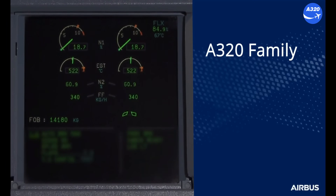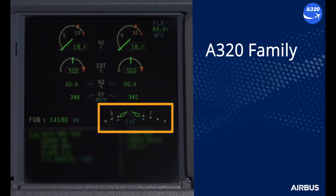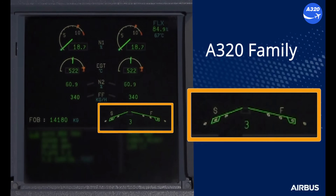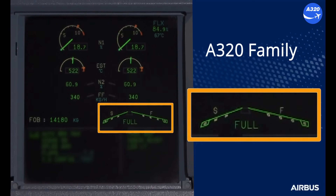On the ECAM upper display, on the single aisle family, the flaps lever position is indicated and the flaps and slats indication is displayed in white. They become amber if there is a slats or flaps fault. For slats, there are four positions that can be displayed, corresponding to the four possible angles of slats extension. For flaps, there are five positions which can be displayed, corresponding to the five possible angles of flaps position.